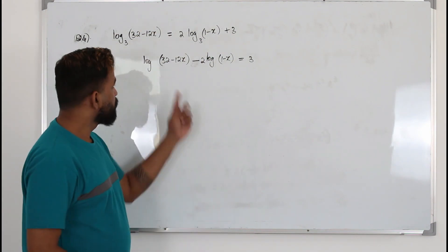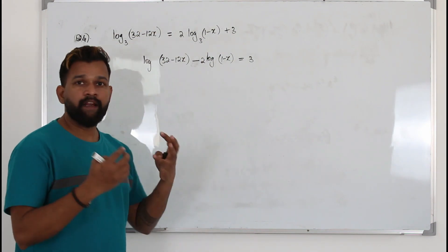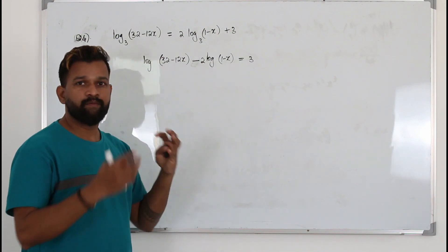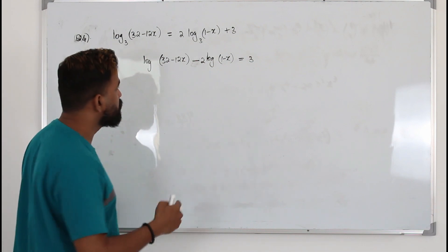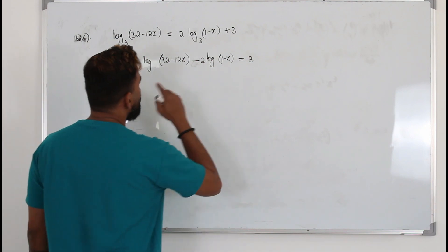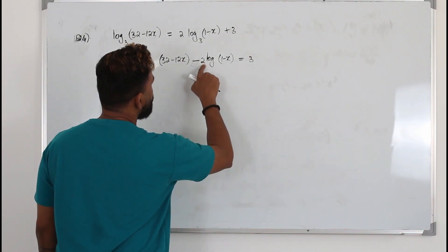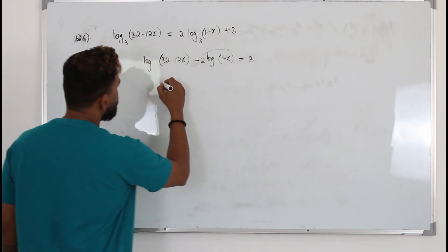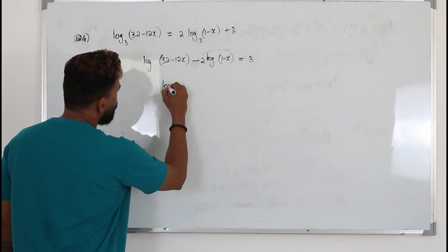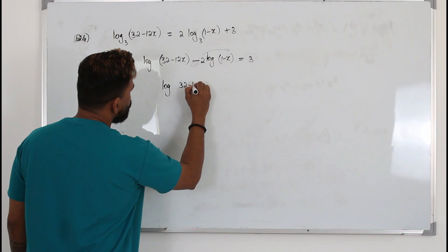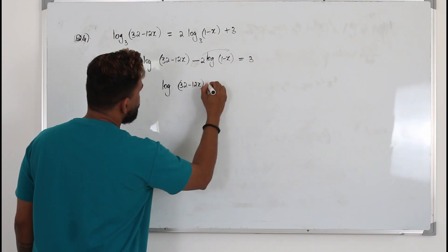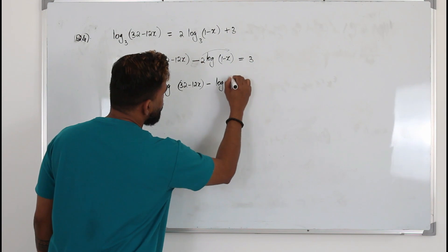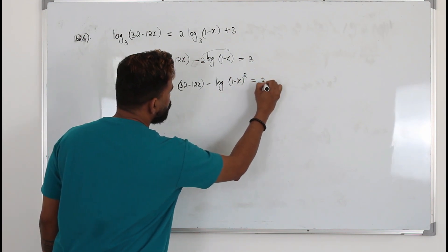Step two: applying laws of logarithms, you have to combine the logarithms into a single logarithm. Put the coefficient as a power first using the third law of logarithm. So you will have log 3 of (2 minus 12x) minus log 3 of (1 minus x) whole squared equals 3.